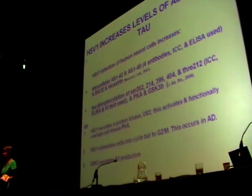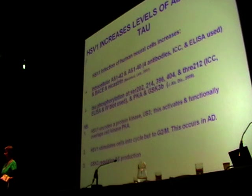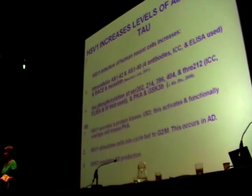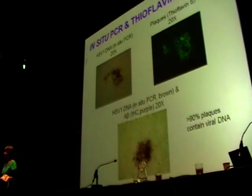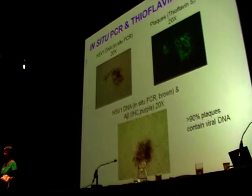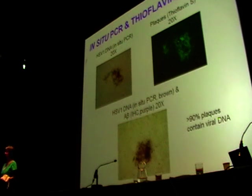The virus encodes a protein kinase which activates and functionally overlaps cell kinase PKA, and stimulates cells into cycle but then leads to G2/M arrest, which also occurs in Alzheimer's disease. GSK3, incidentally, regulates amyloid-beta production. We should also mention that we found that in herpes-infected mouse brains, there was deposition of beta-amyloid, which is quite an interesting finding and tallies with the cell culture results.